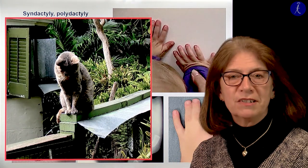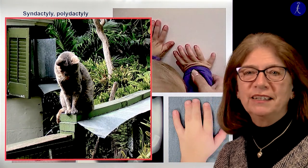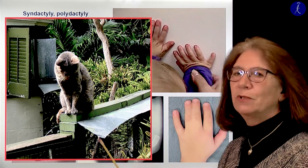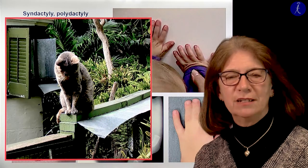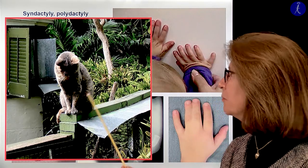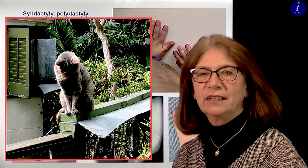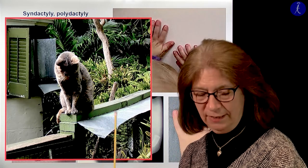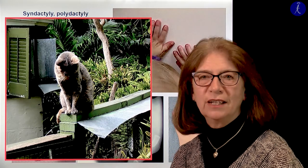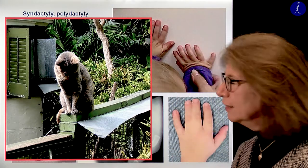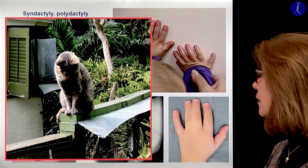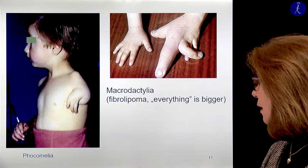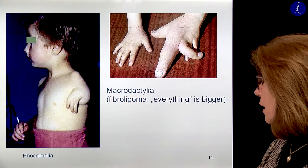Animals also sometimes have polydactyly. This is a cat in Key West from Hemingway's garden, because Hemingway had a cat with six toes, and ever since, those six-toed cats are living in that garden.